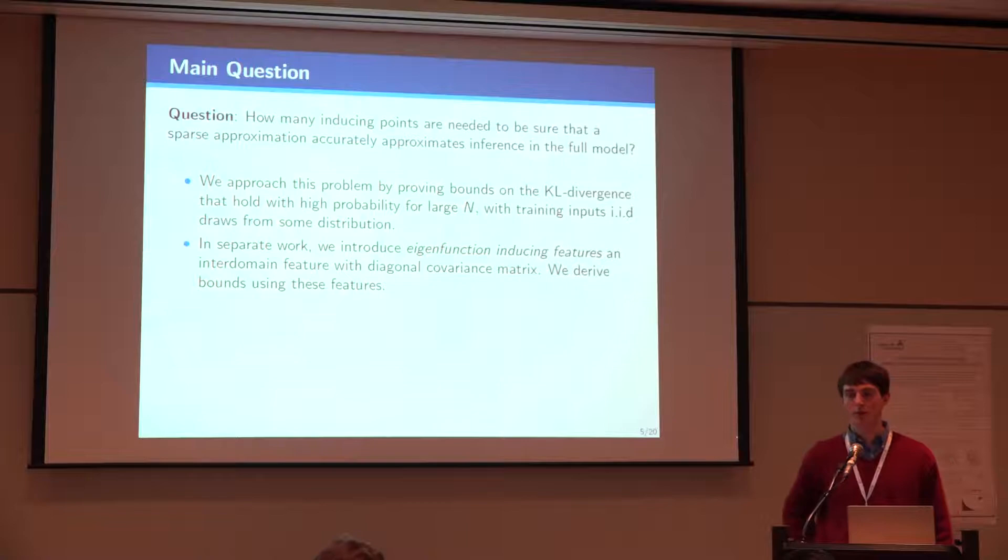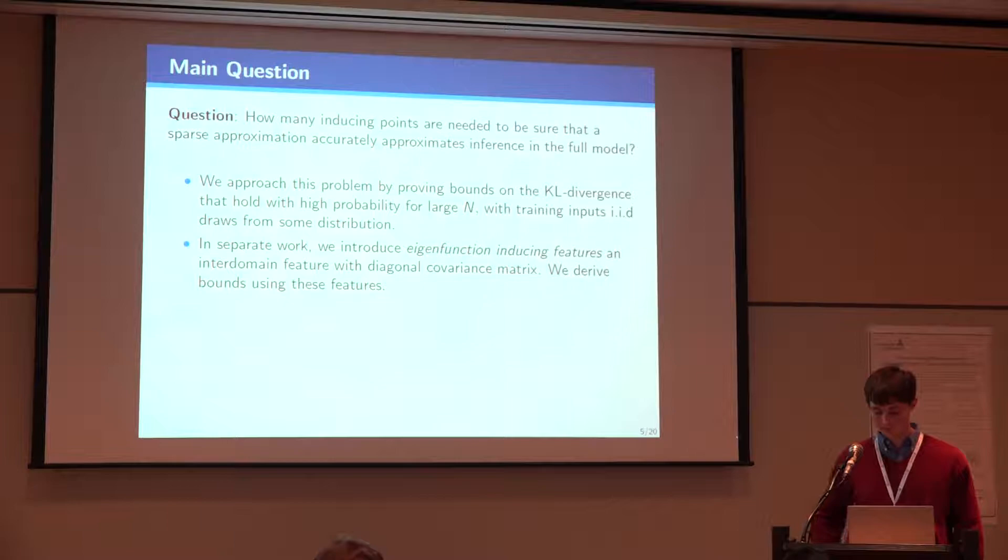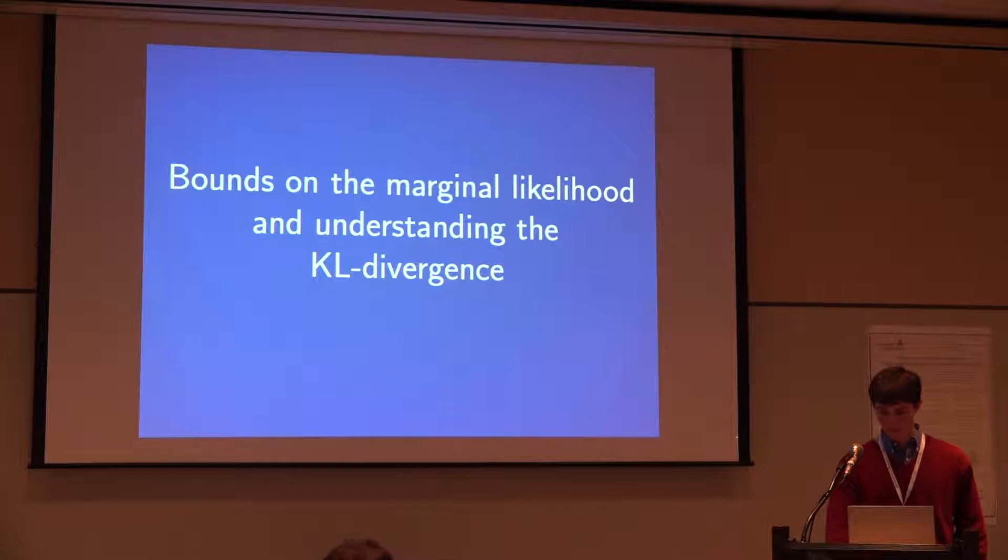In a separate work we introduced these eigenfunction inducing features. They're an example of an inner domain feature. So basically instead of putting down points and using these for sparse inference, we take an integral of a process against some function. The really special property about these inducing features is they have diagonal covariance matrix. So they're orthogonal. And that's going to help us prove these bounds. It also has some nice computational benefits which we explore in different ways.